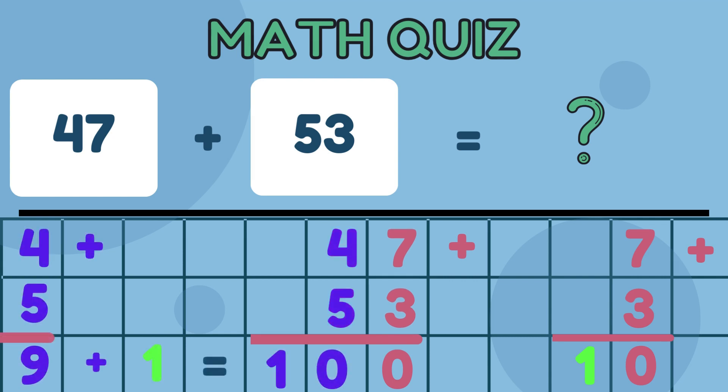Now, add the digits in the 10's place, including the carried over value. 4 plus 5 plus 1 equal 10. Again, since 10 is a two-digit number, we carry over the 10's place value, 1, to the next step. Step 3.